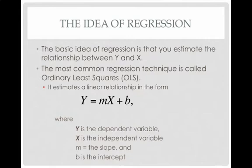Y will be all of your dependent variables for all your observations. X will be the independent variable for all of your observations for all of your countries. M is the slope, and b is the intercept.